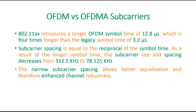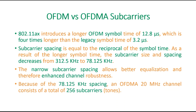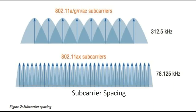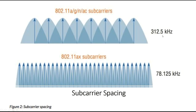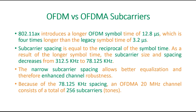The new subcarrier spacing allows better equalization and therefore enhances channel robustness. As the subcarrier spacing is reduced to 78.125 KHz compared to the legacy 312.5 KHz, an OFDM 20 MHz channel in 802.11ax now consists of a total of 256 subcarriers. In the legacy system spacing was 312.5 KHz, whereas here it is 78.125 KHz — giving us 64 subcarriers in legacy versus 256 subcarriers in 802.11ax.